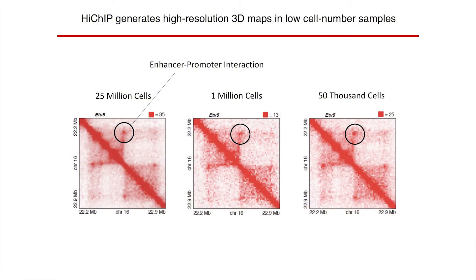The next question is whether we can go down to a cellular input relevant for rare cell subsets or patient cells — we use 50,000 cells as the benchmark. The challenge is to improve the signal-to-noise by about three orders of magnitude, from 50 million cells to about 50,000 cells. Showing 2D interaction plots, we compare three experiments starting with 25 million, 1 million, and 50,000 cells. The large diagonal represents each chromosomal region with itself; anything off-diagonal is a distal interaction, in this case enhancer-promoter. We maintain that interaction signal down to 50,000 cells and have even gone as low as 10,000 cells.